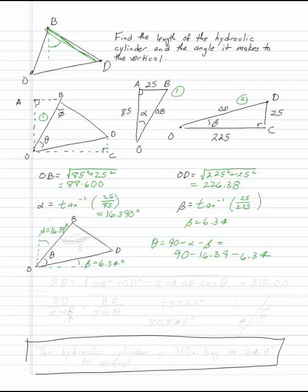Once I've got this nice triangle, I can use the law of cosines. So BD by the law of cosines is the square root of OB squared plus OD squared minus 2 times OB times OD times the cosine of the angle in between them, which in this case is theta. And that gives me 310 for BD.